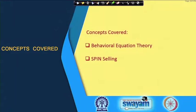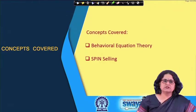Today we shall be moving on with our discussion on the various theories of selling. We shall be talking about one theory that is both buyer and seller oriented — a combination of both — which is the behavioral equation theory. We shall also be speaking about SPIN selling, which is actually a methodology, not a theory, but a methodology to bring about successful sales.